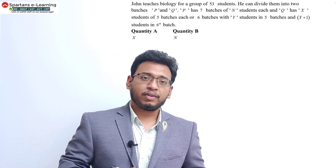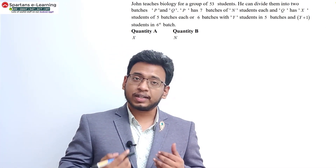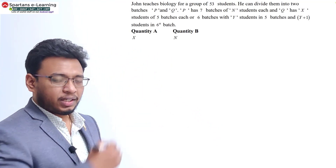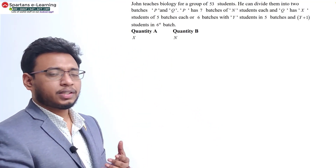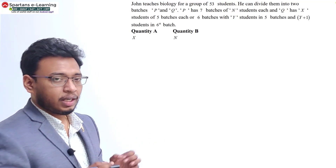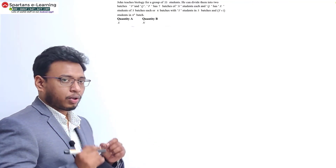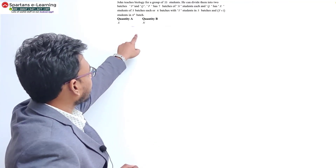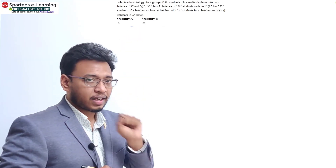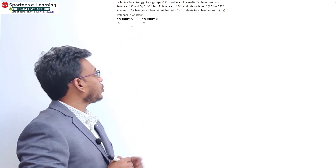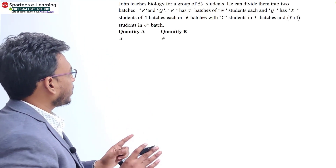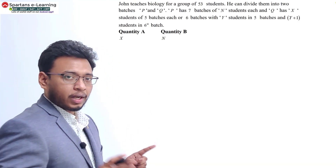This question has a lot of redundant data — it is very lengthy and talks about X, Y, P, Q and many things. But you should focus on what exactly they're asking: they're asking only about X and N. The comparison is between X and N. What you need to do is convert all this data into numerical form.